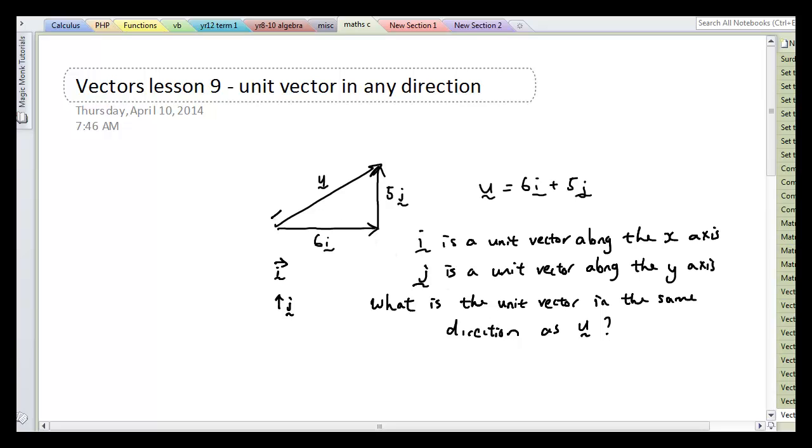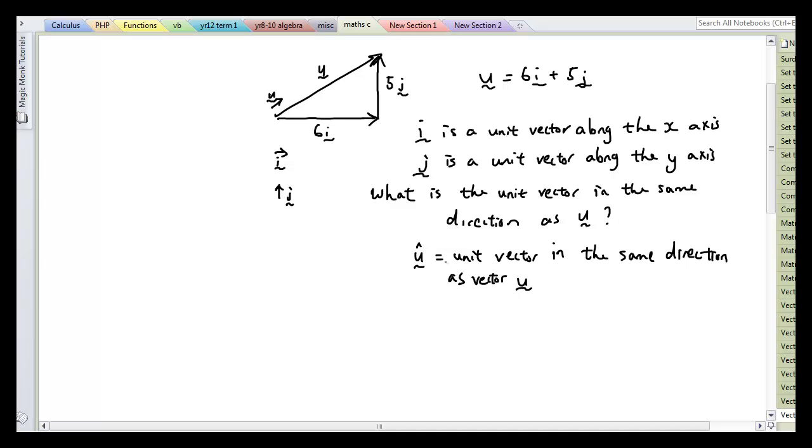Can we define a unit vector in the same direction as u? So for example, it will be something like this, one unit along this length. Now the answer is yes, we can. And the symbol for that is the vector u with a little hat on top. This is the unit vector in the same direction as vector u.